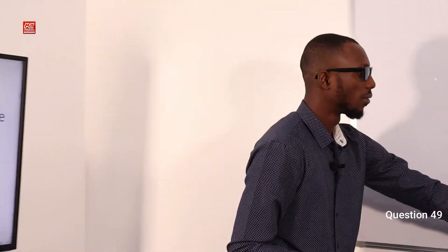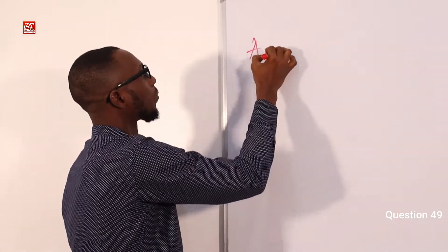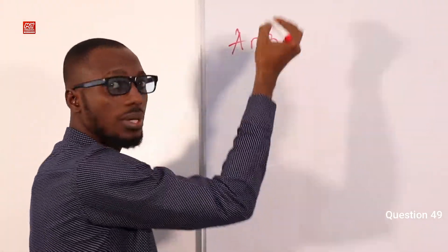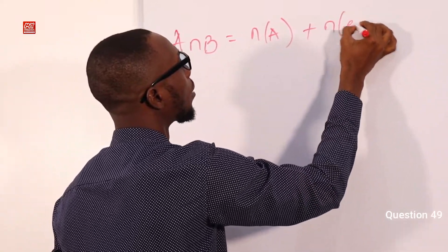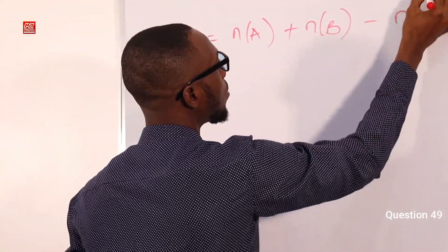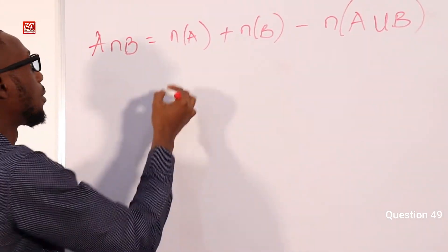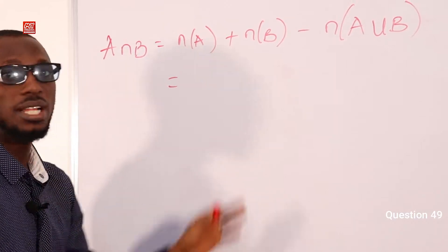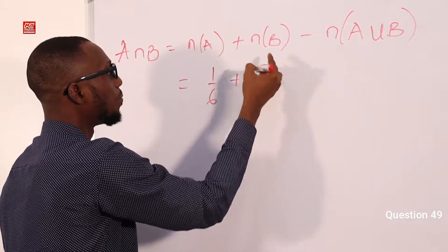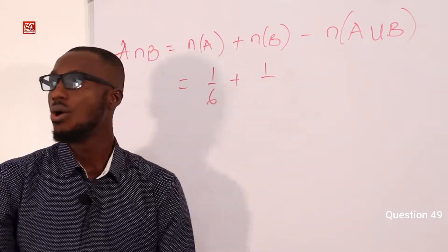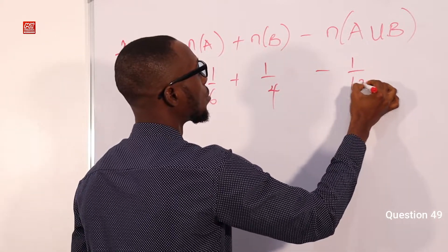We should remember from set theory this equals the number of A plus the number of B minus the number of A and B. This tells us that P(A) is 1 over 6, P(B) is 1 over 4, minus 1 over 12.